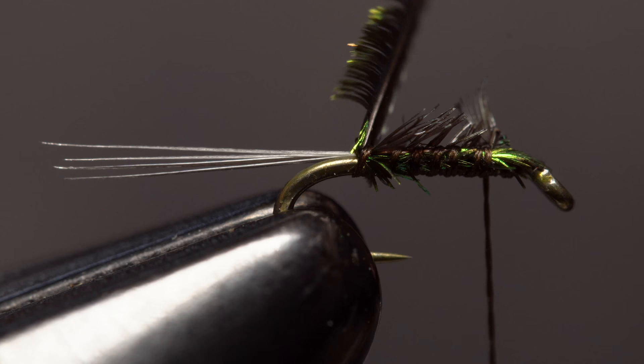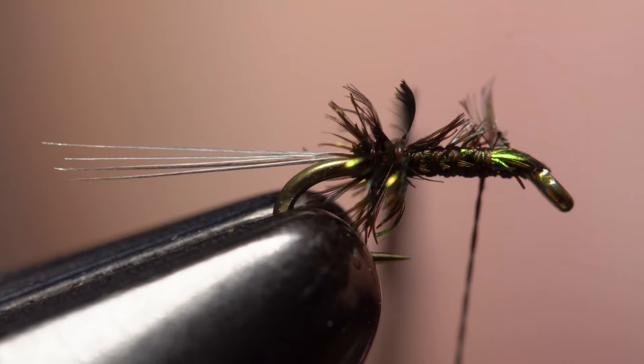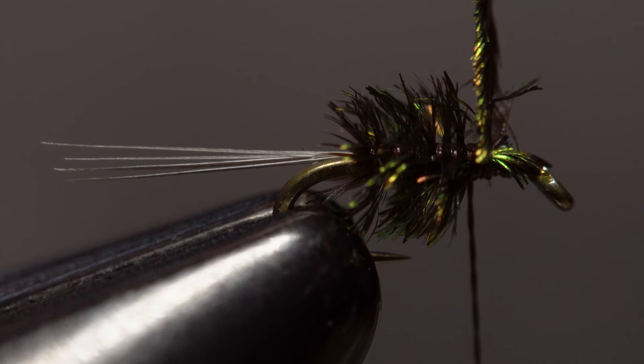Begin making touching wraps with the hurl up the hook shank to build a fluffy, shimmery little body. Ideally the flues of the hurl should curve slightly rearward as you see here. This isn't absolutely essential but does create a more uniform body on the fly. When you reach your tying thread, take two or three wraps to secure the hurl to the hook. Once you have it locked down really well, break or snip the excess off close.